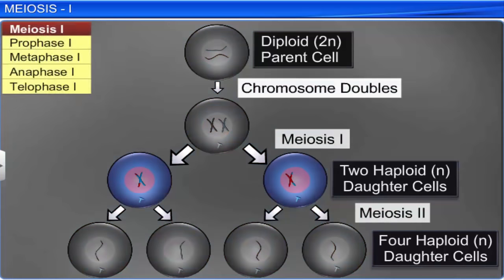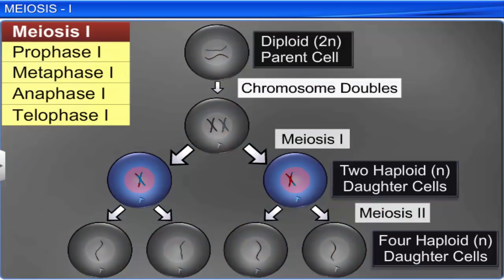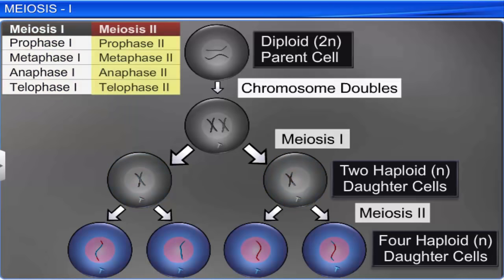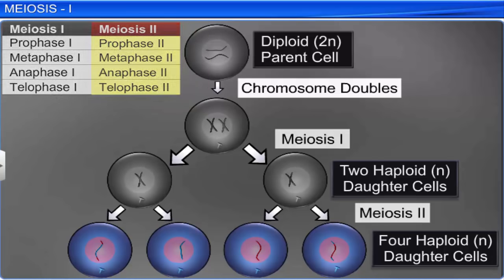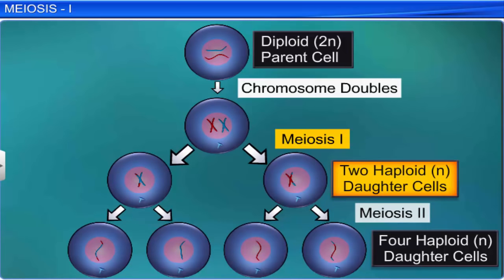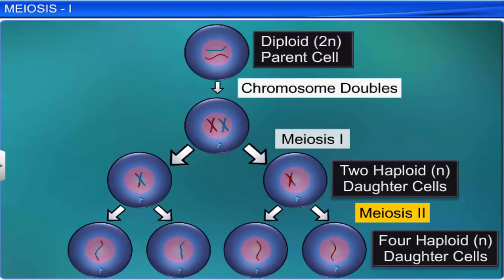Meiosis 1 is divided into four stages: prophase 1, metaphase 1, anaphase 1, and telophase 1. Similarly, meiosis 2 is divided into four phases: prophase 2, metaphase 2, anaphase 2, and telophase 2. Meiosis 1 halves the number of chromosomes, and meiosis 2 splits the sister chromatids of each chromosome, resulting in four haploid cells.